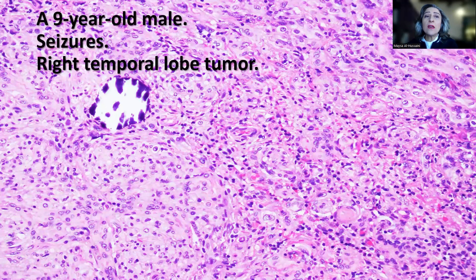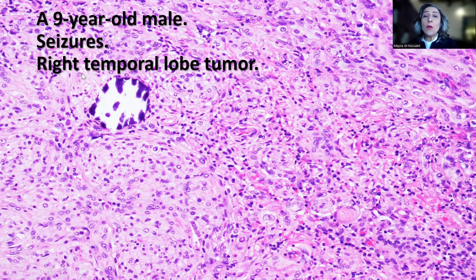This is a nine-year-old male patient who presented with recurrent seizure and was found on investigation to have a right temporal lobe tumor that was cystic with a mural nodule and superficially located, involving the cortex.